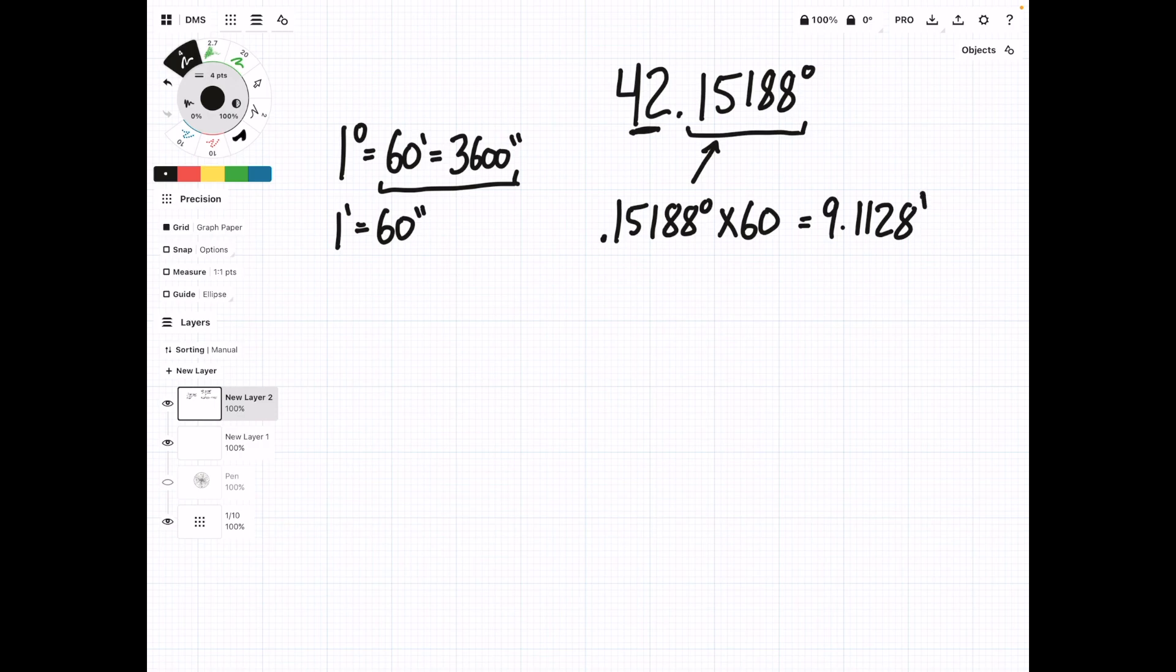Now, if we want to get seconds, we just repeat the process. But this time, we take this fraction, since this is a fraction of a minute. So, 0.1128 times 60. Plug that into the calculator.